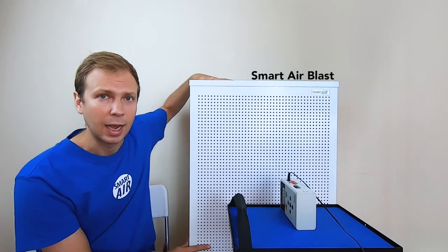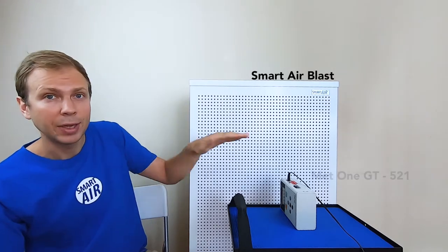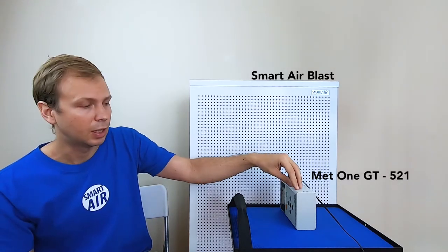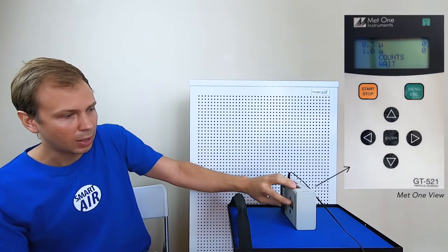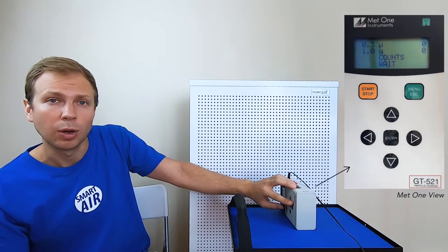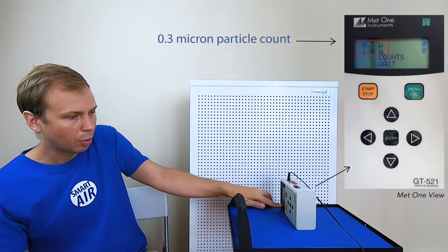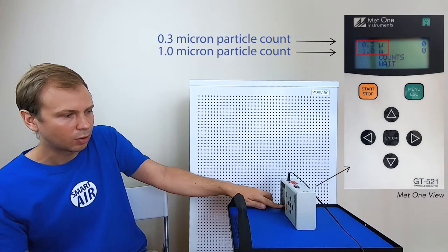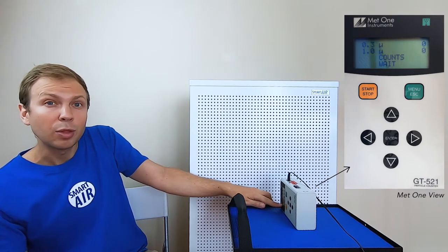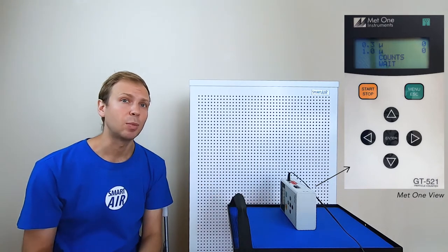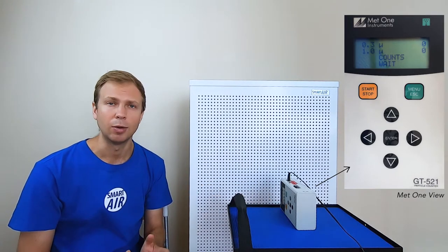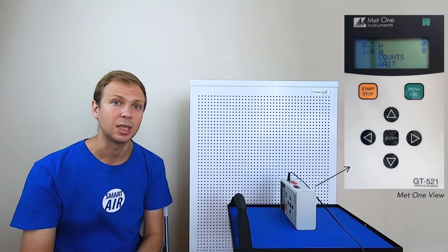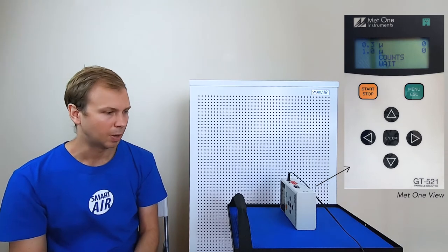Here we have the BLAST air purifier and our MET1 particle counter set up. This is the MET1 GT521, and it measures 0.3 micron and 1.0 micron particle counts. 0.3 microns is considered the most difficult particle size to capture, and all HEPA filters are measured against this standard. So we do the same here at Smart Air.